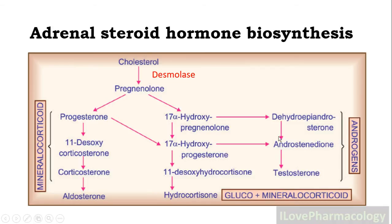Another pathway is the androgen synthesis pathway, where 17-alpha-hydroxyprogesterone gets converted to dehydroepiandrosterone, and from this it gets converted into androstenedione, and finally to form testosterone.